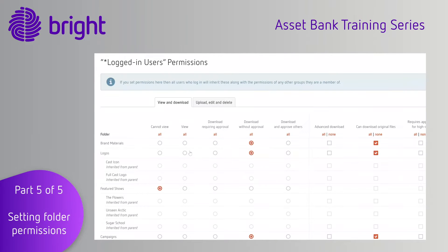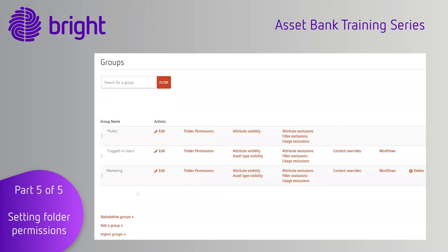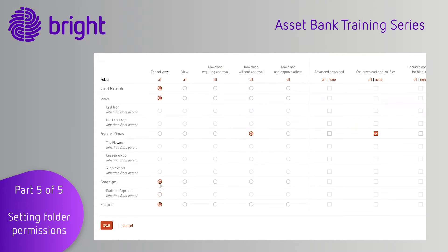The Logged In Users group forms the baseline of all of your user permissions in the system. Everyone with a user account will be a member of this group. A user will always inherit the most generous permission that their user account has. So if you don't want the marketing team to see a folder, you have to make sure that the public and logged in user groups can't see it either.